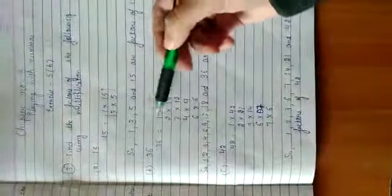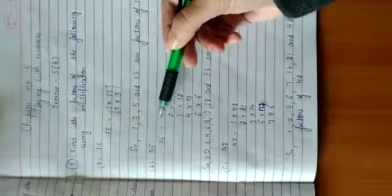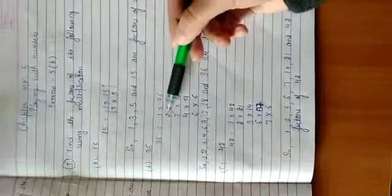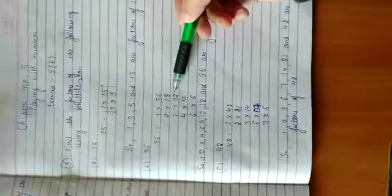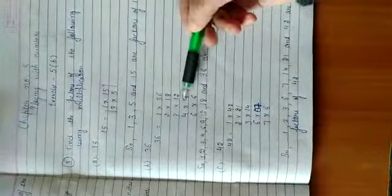Here is another example. We can express 36 as 1 multiply 36, 2 multiply 18, 3 multiply 12, 4 multiply 9.